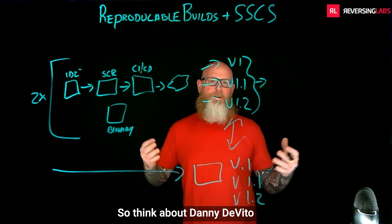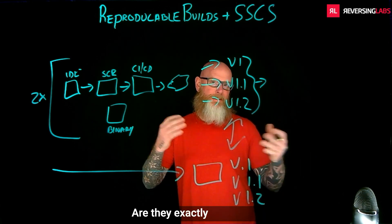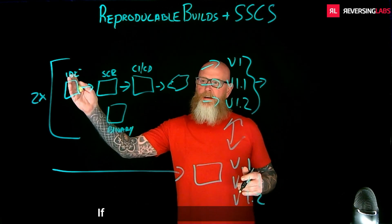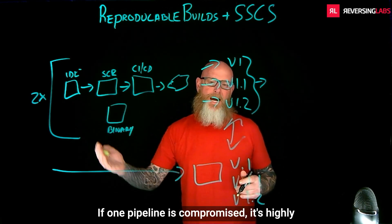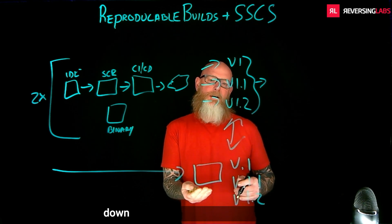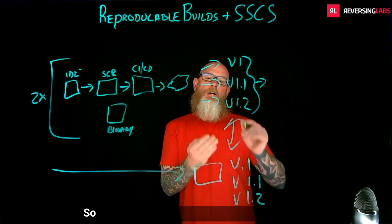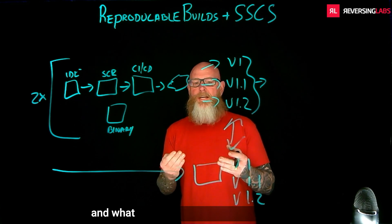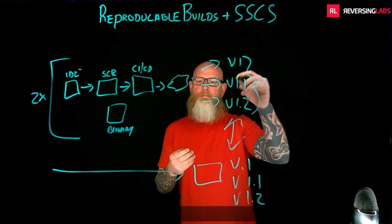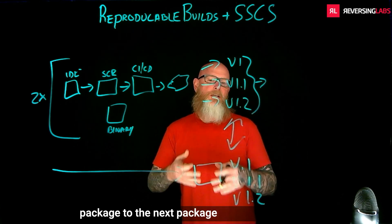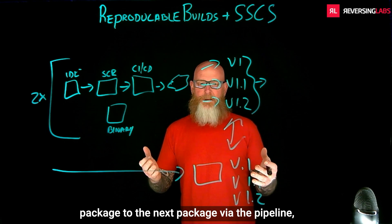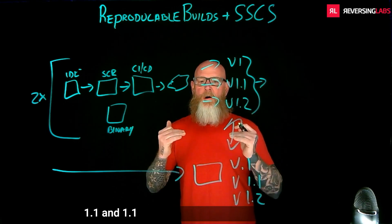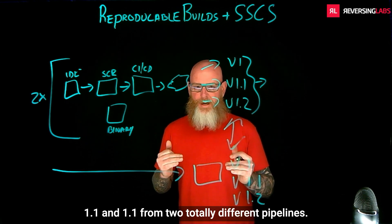Think about Danny DeVito and Arnold Schwarzenegger in Twins — are they exactly the same? No, they're not. That's what you're looking for. If one pipeline is compromised, it's highly doubtful that a secondary, more locked-down pipeline is compromised as well. So you can actually sniff out what is happening — not just comparing one package to the next via the same pipeline, but comparing version 1.1 and 1.1 from two totally different pipelines.